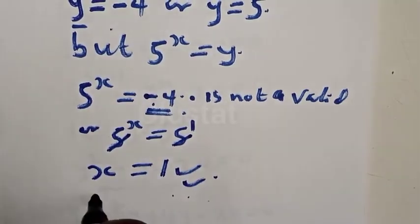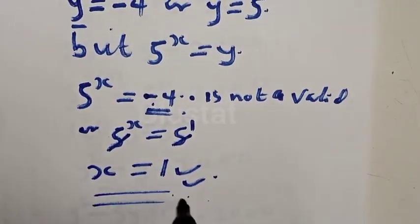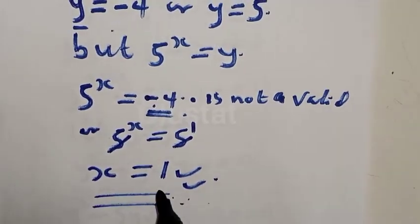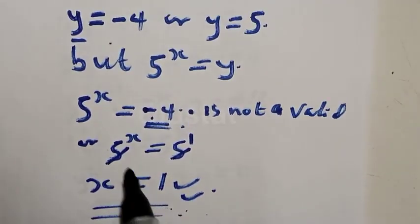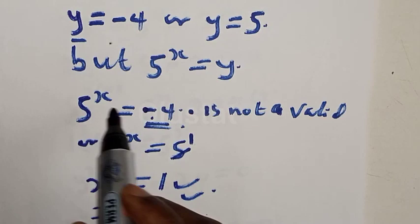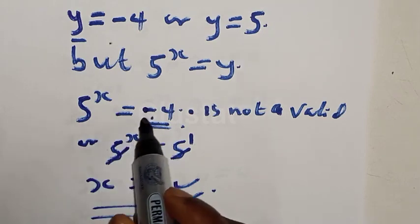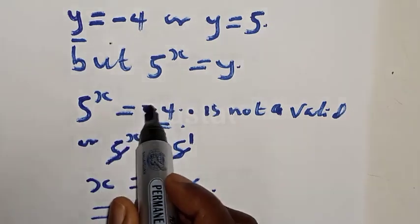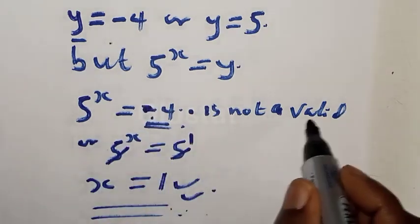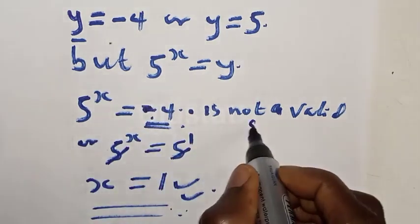As you can see, 5 raised to power x equal to minus 4 is not a valid solution because it is negative.